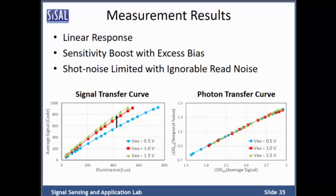This slide shows the quantum response measurement result. The left figure is the signal transfer curve — illumination in lux versus average signal in output code — showing the device has linear response and sensitivity can be boosted by increasing the excess bias. The right figure is the photon transfer curve, where X and Y axes are average signal and temporal noise in log scale. We demonstrate shot noise limited response, and in the small signal region there is no read noise floor, which verifies the benefit of in-pixel photon quantization.